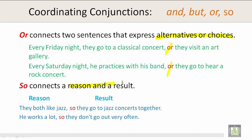So connects a reason and a result. Let's take a look. They both like jazz — reason — so they go to jazz concerts together — result. He works a lot — reason — so they don't have to go out very often — result.